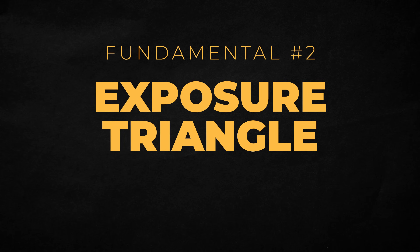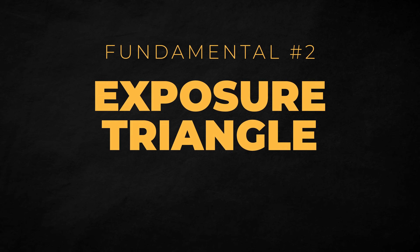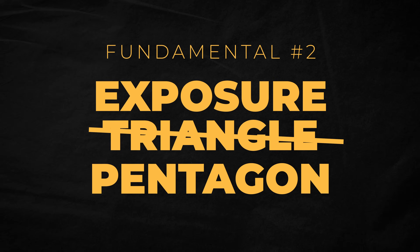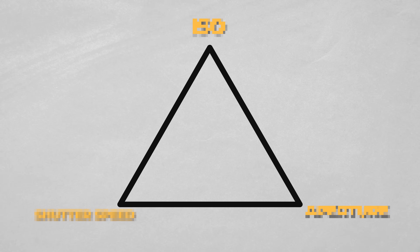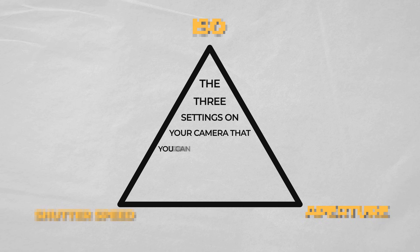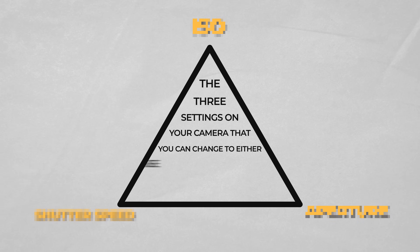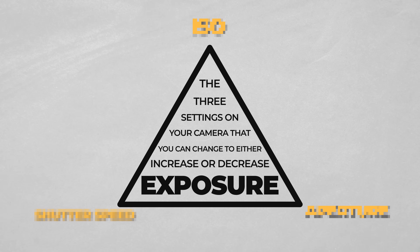The next fundamental thing we want to understand when shooting video is something commonly referred to as the exposure triangle — but today we're gonna talk about the exposure pentagon. The exposure triangle refers to the three settings on your camera that you can change to either increase or decrease exposure.